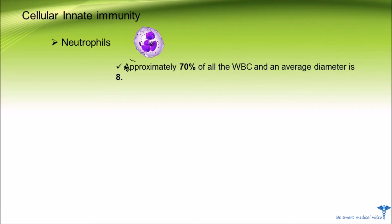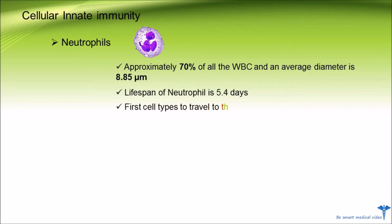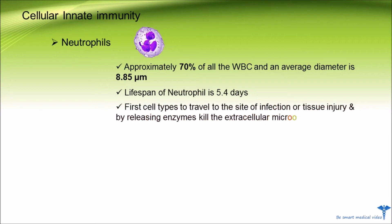Third, neutrophils are approximately 70 percent of all white blood cells in the human body. Their average diameter is 8.85 micrometers and their lifespan is 5.4 days. Neutrophils are the first cell type to travel to the site of infection or tissue injury, where they release enzymes to kill pathogens or extracellular microorganisms.